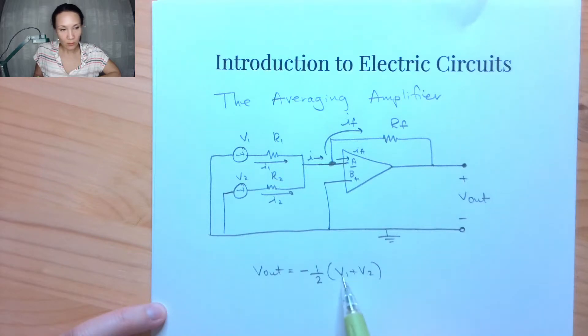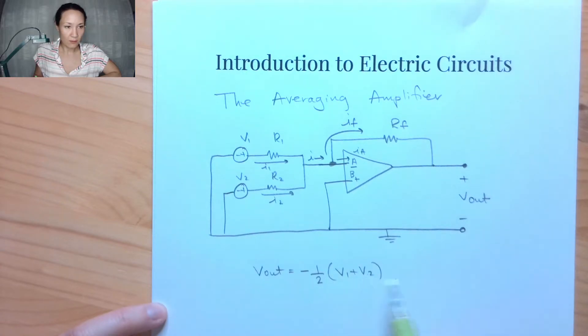Where since I have two voltage sources, my gain, I want to be one over two. So if you had three, this would be one over three. If you had four, it would be one over four. So that's why it's called an averaging amplifier. It's just a summing amplifier where the gain is one over the number of input voltage sources you have.